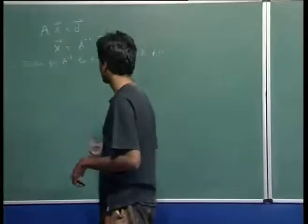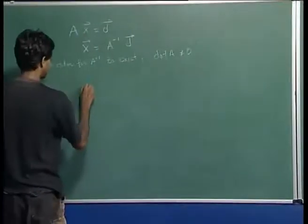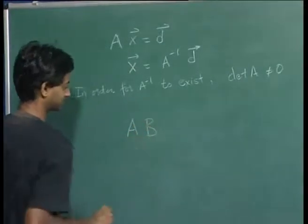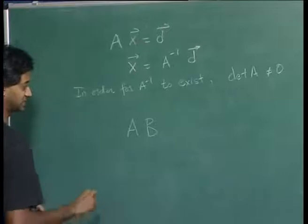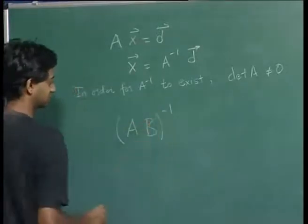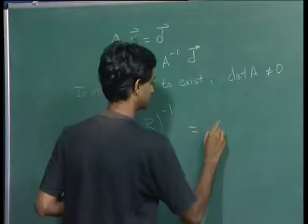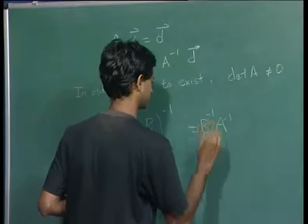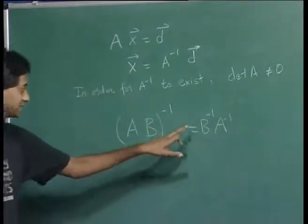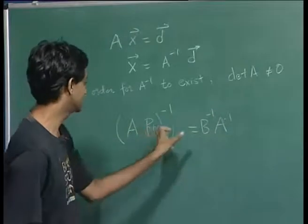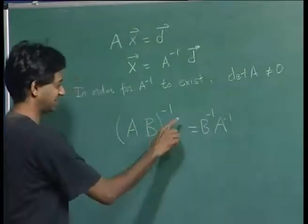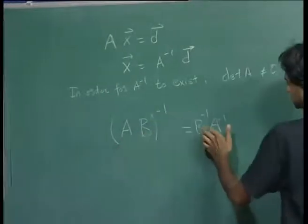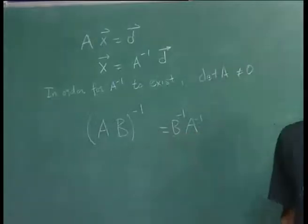Suppose you have matrices A and B and you take their product. The inverse of the product AB is B inverse times A inverse. You can verify this because if you take B inverse A inverse and multiply it by AB you get the identity matrix. So the inverse of a product of matrices is the product of the inverses taken in reverse order.